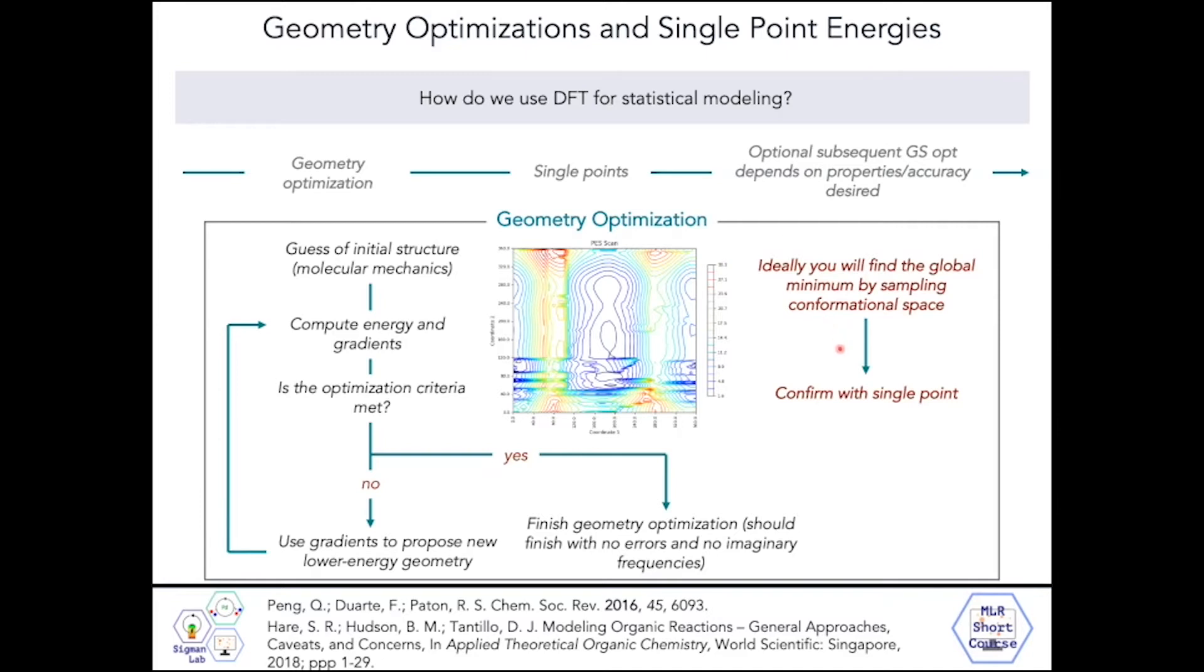One thing I would like to note is, as we're moving upwards in theory, from molecular mechanics to a mid-level DFT theory to a higher level DFT theory, really our energies get more accurate. We start from inaccurate molecular mechanics geometries and then move to more accurate energies. We want to make sure that we get parameters from that lowest energy structure, and that will also influence any Boltzmann-averaged parameters that we take.